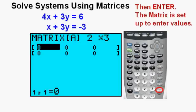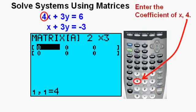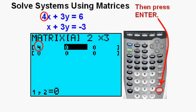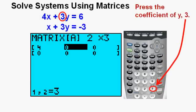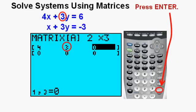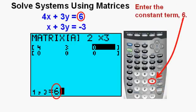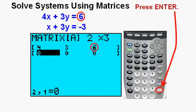Now the matrix is set up for us to enter our values. First we enter the coefficient of x, which is 4. Then press enter. We see the 4 entered properly here. Now press the coefficient of y, which is 3. Then press enter. We see 3 in the proper place. Enter the constant term on the right, which is 6. Press enter. We see the constant 6 in its proper place.